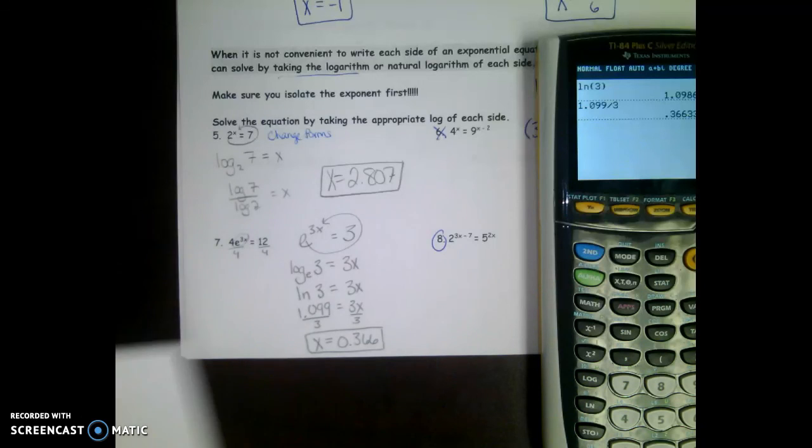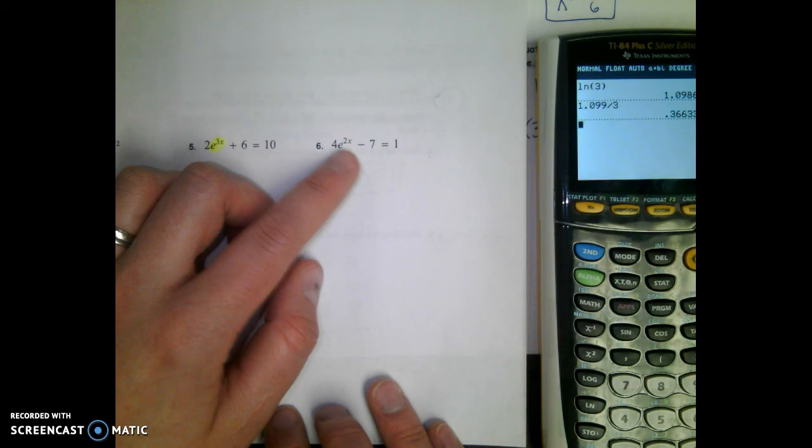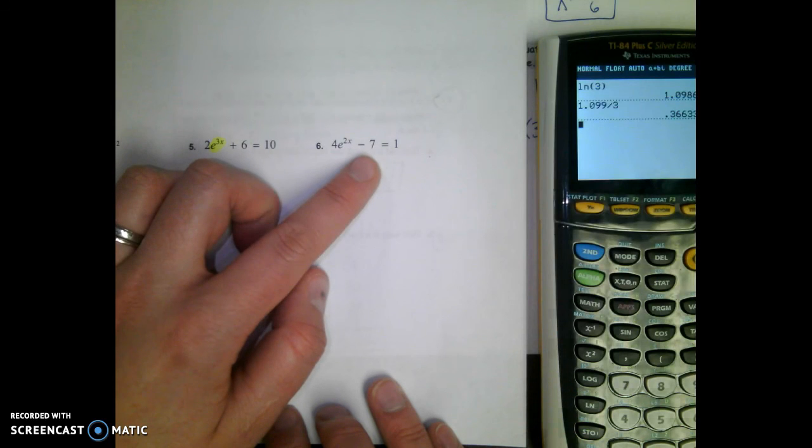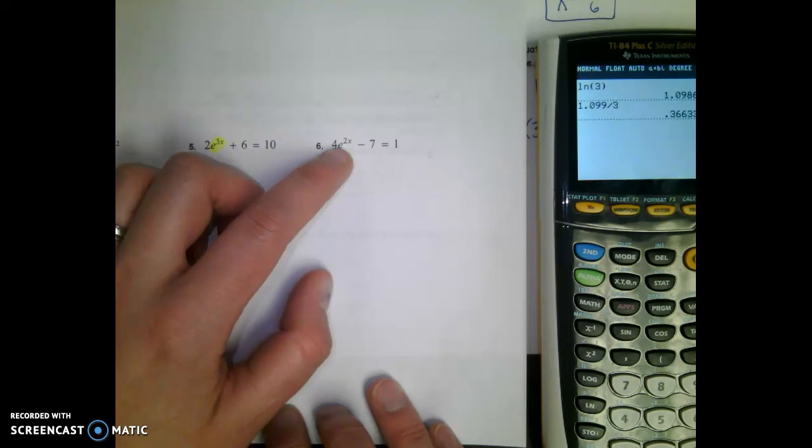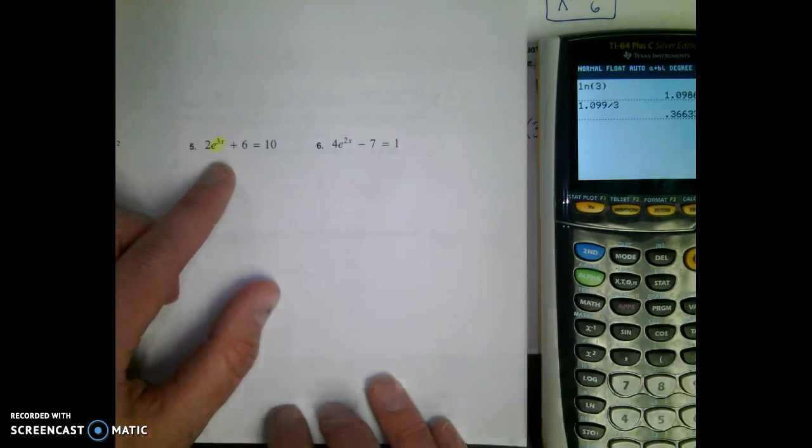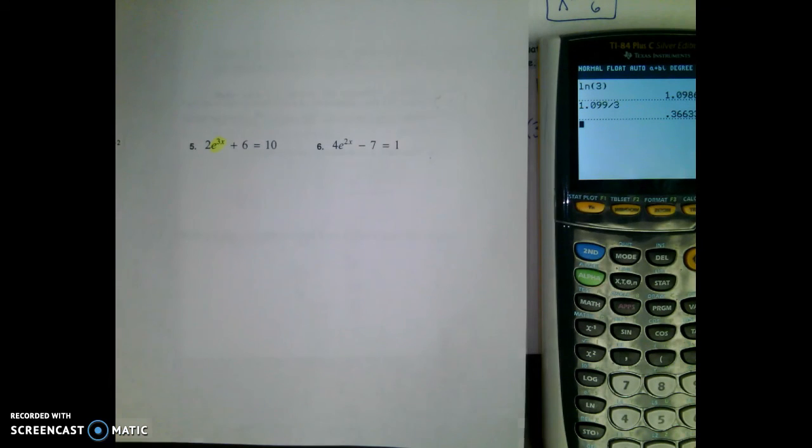Take a look at a potential problem like number 6. What do you suppose you would have to do first? Add 7 to both sides and then divide by 4. Number 5, you would need to subtract 6 on both sides then divide by 2. Whatever is raised to the exponent, get that by itself.